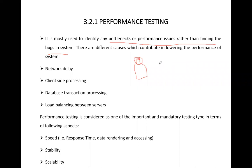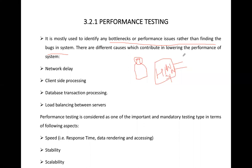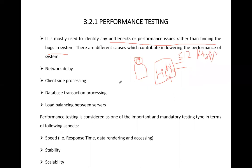For example, in a system where the hardware is very good and the software is very good, but the interface or network connectivity is not good — say the internet bandwidth is only 512 kbps — then even though hardware and software are high-level and optimized, the system's performance will be low because of that bottleneck.